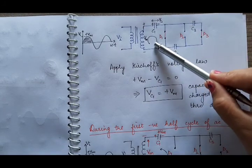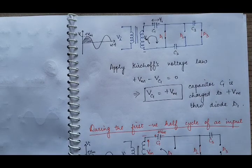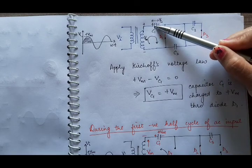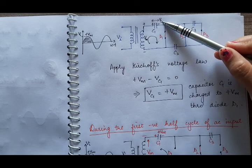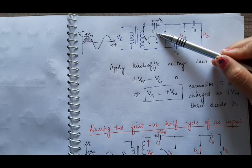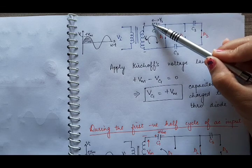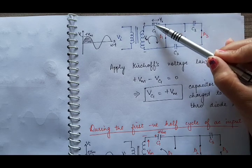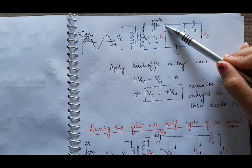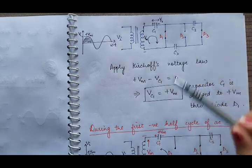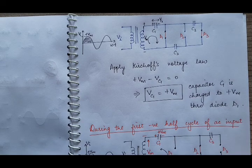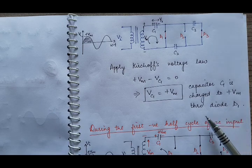Now apply Kirchhoff's voltage law to this loop. We will have plus Vm, and since signs are not alternate, minus VC1 equals zero. The upper plate of C1 is positively charged because it is connected to the positive end, and the lower plate is negatively charged. Therefore VC1 is equal to plus Vm, meaning during the first positive half cycle, capacitor C1 will be charged to plus Vm through diode D1.